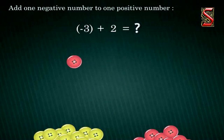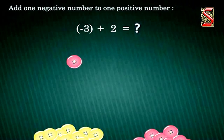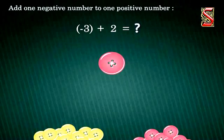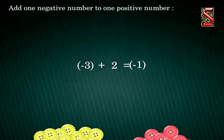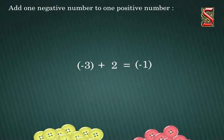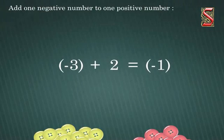So, what is left here? Yes, we are left with one red button which is equal to negative 1. Therefore, negative 3 plus positive 2 is negative 1.